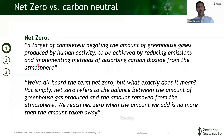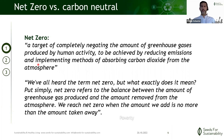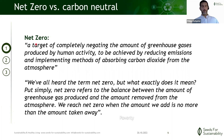Another definition I want to show you: we've all heard the term net zero, but what exactly does it mean? Put simply, net zero refers to the balance between the amount of greenhouse gas produced and the greenhouse gas removed from the atmosphere. We reach net zero when the amount we add is no more than the amount taken away — so at least you're not contributing to global warming.